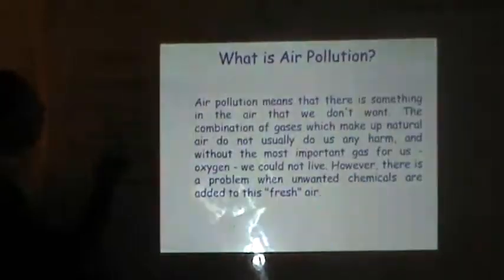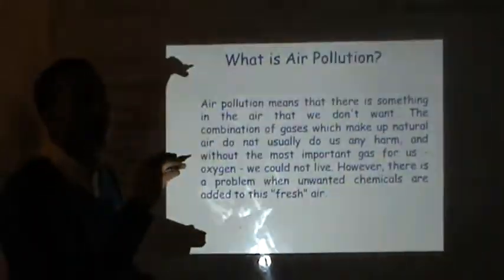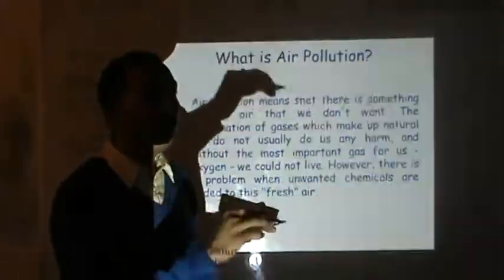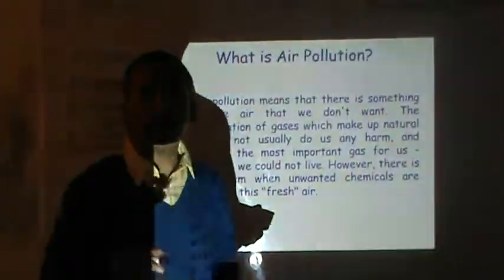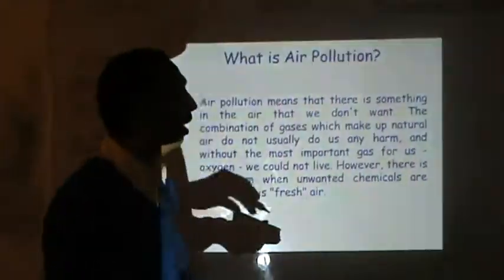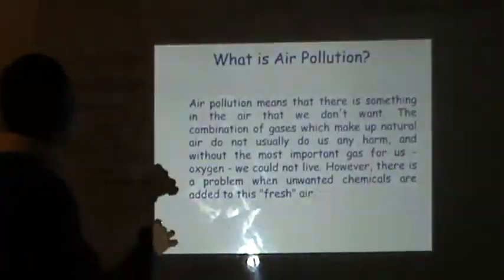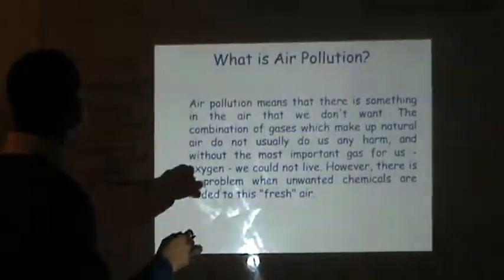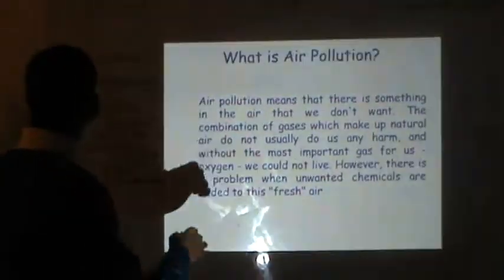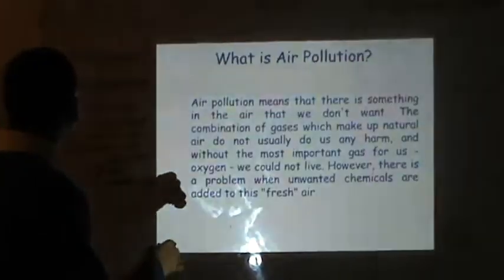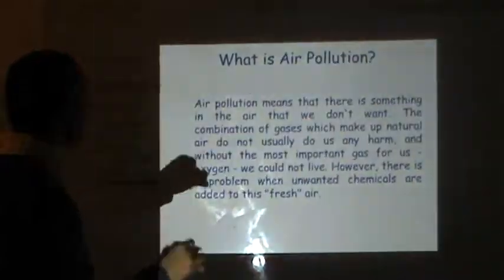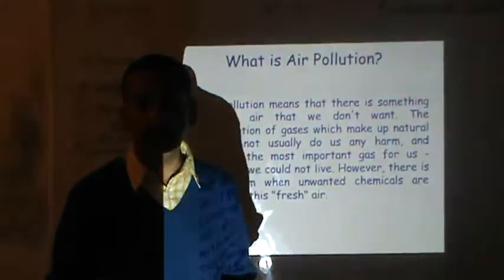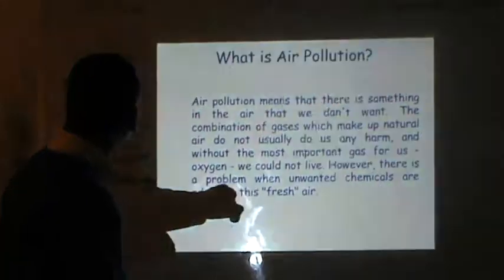So these are the key terms: pollutants are any unwanted, undesired substance that beyond a certain limit becomes a pollutant. Contaminants are those which we are adding from the outside. And primary pollutants are basically gases which are present in the atmosphere.